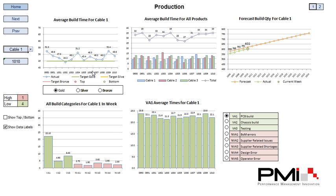that changes the charts to bring in the Cable 1 data and also changes all the chart titles. This is very useful in reducing the size of the dashboard rather than having one sheet per product. Obviously you can have many, many different products. We can choose from a simple drop-down list, pick the product you wish to see and pull it back onto the same chart.